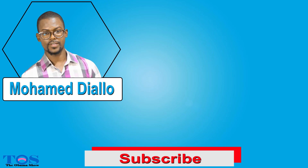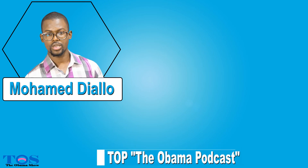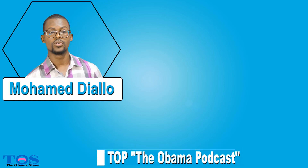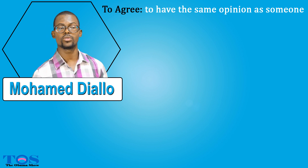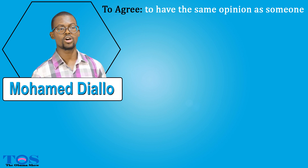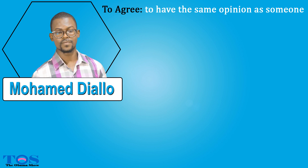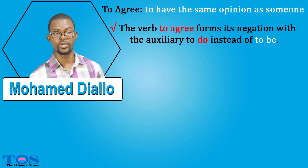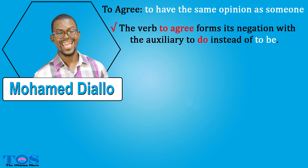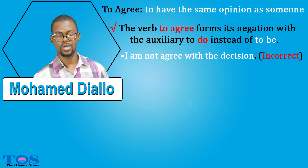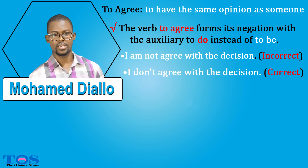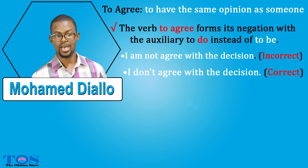Still in the same framework, I would like to talk about the verb 'to agree', mainly in the use of the negation. Usually people use the verb 'agree' to form the negation using the auxiliary 'to be'. Whereas the verb 'to agree', its negation is formed with the auxiliary 'to do'. So you cannot say 'I am not agree'. You should say 'I don't agree', or in the past tense, 'I did not agree'.